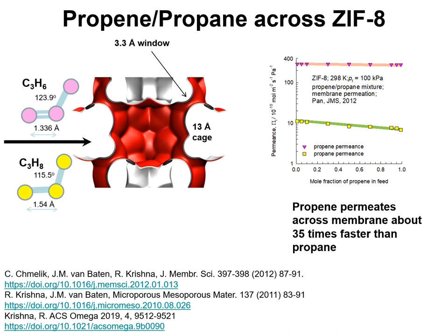I show here experimental data on the permeances of propene and propane across a ZIF-8 membrane. Further details are provided in my publications. Both molecules, propene and propane, are larger than 3.3 Angstrom in size, but due to window flexibility, both of them can permeate.